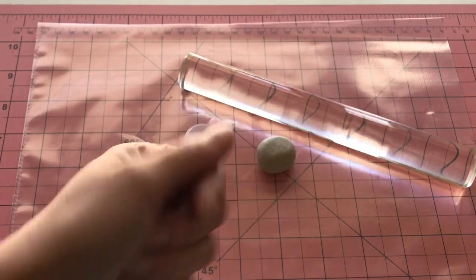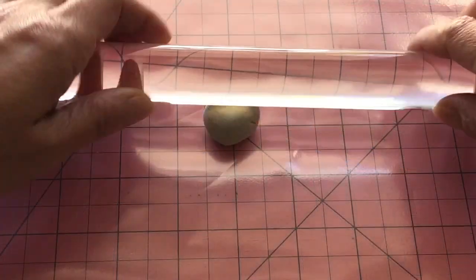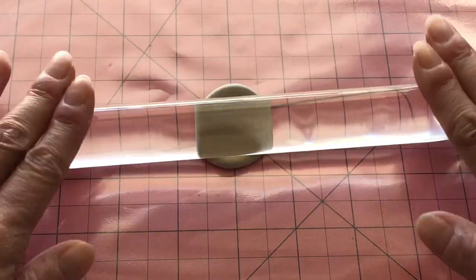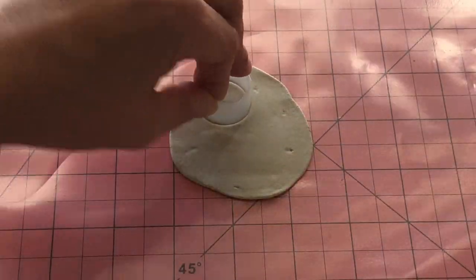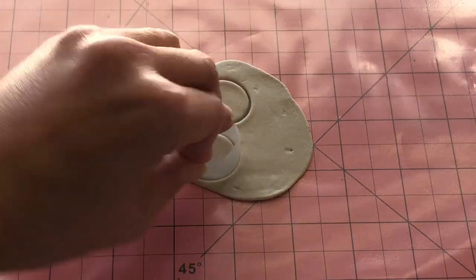To make these adorable fortune cookies, roll out a ball of tan air dry clay. To cut the circles, we are using the lid from a lunchbox juice bottle.